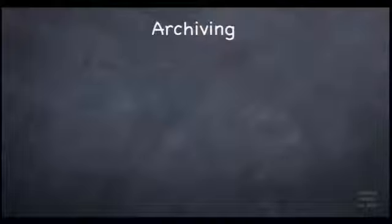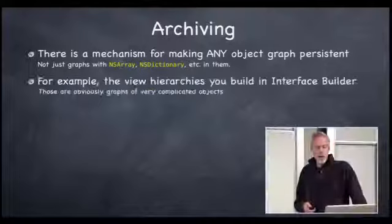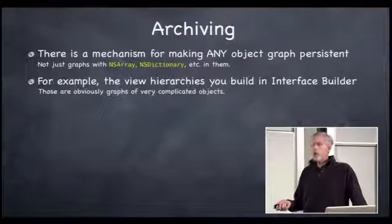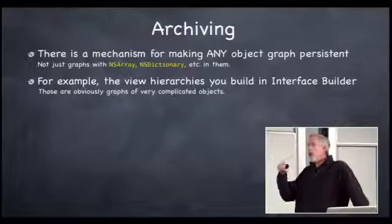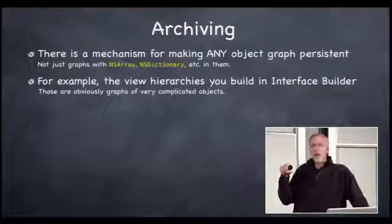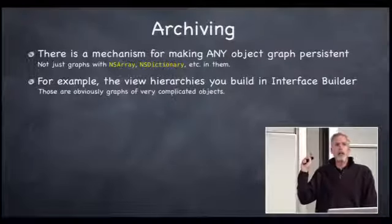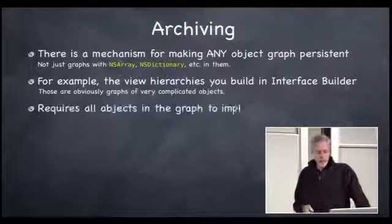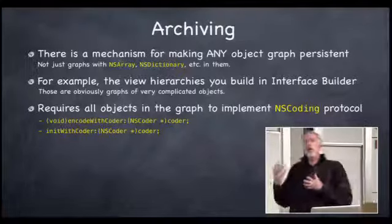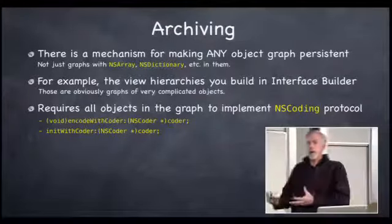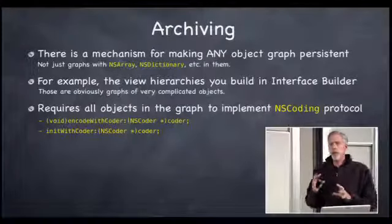Sometimes you have very complicated object graphs that aren't property lists, and you need to store them and reconstitute them later. iOS has a mechanism for working with these arbitrary graphs. A good example is the view hierarchy you build in Interface Builder — when you hit save, it archives the objects. This is a pretty simple fundamental mechanism, but you have to be really careful how you implement it.